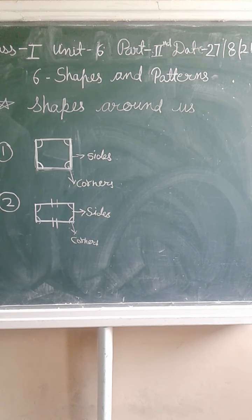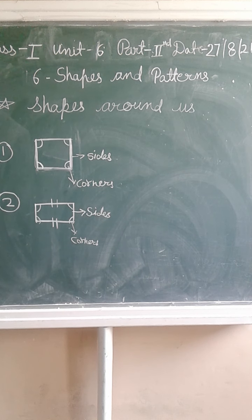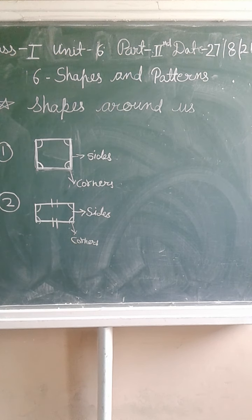What is the difference between square and rectangle? Both have four sides and four corners. But in a square, all sides are equal. In a rectangle, opposite sides are equal.